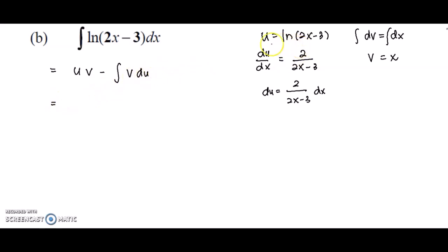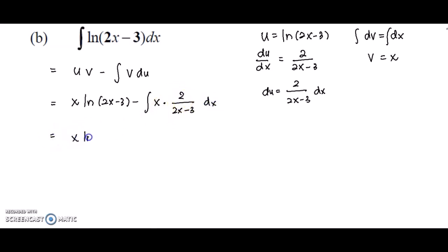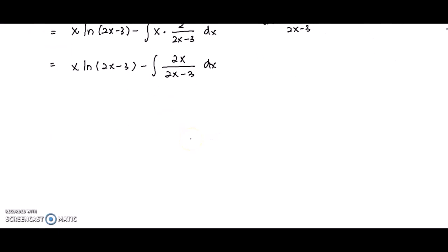Now substitute into the formula uv − ∫v·du. This gives x·log(2x − 3) minus the integral of x · [2/(2x − 3)] dx, which is the integral of 2x/(2x − 3). To integrate 2x/(2x − 3), we use the substitution method. We can refer to BSPD as a guide for choosing what to let u equal in substitution.